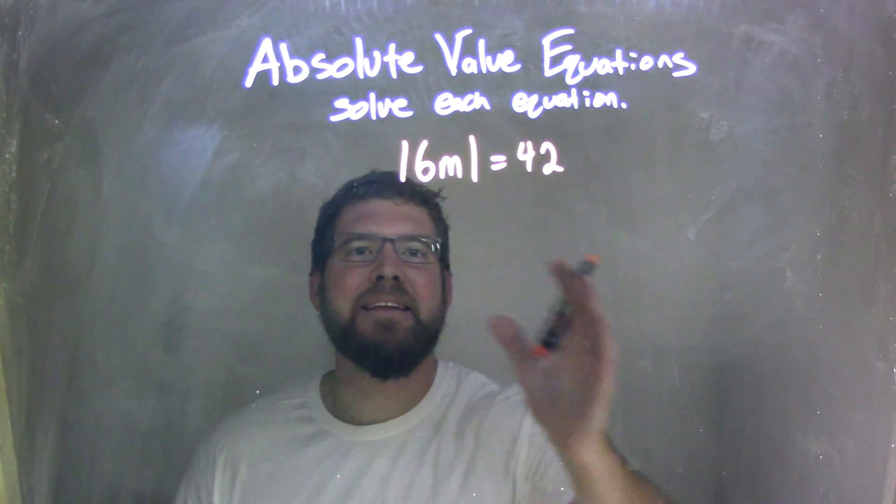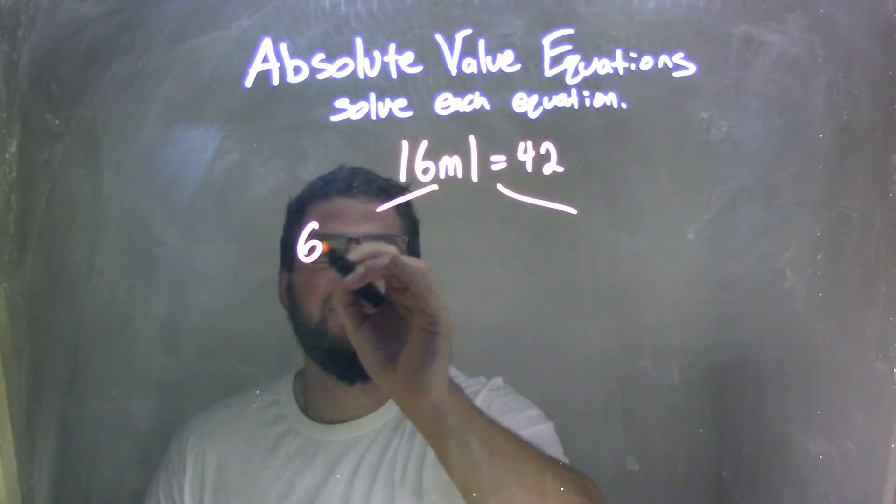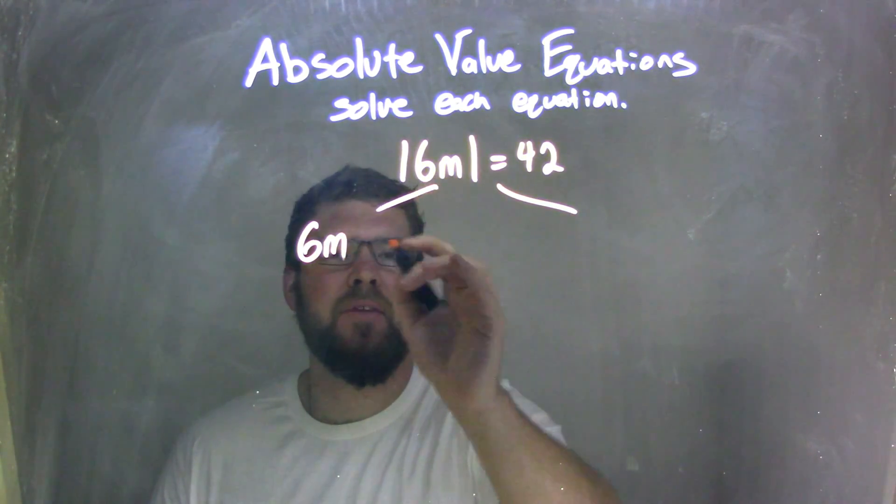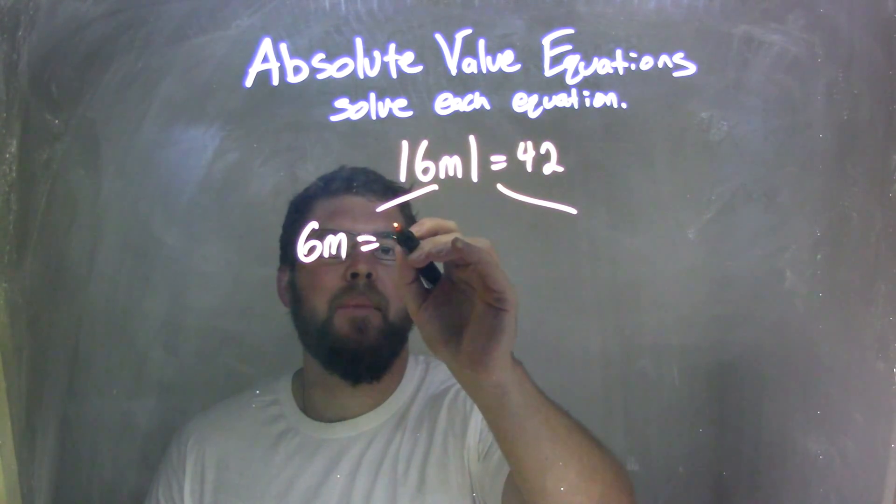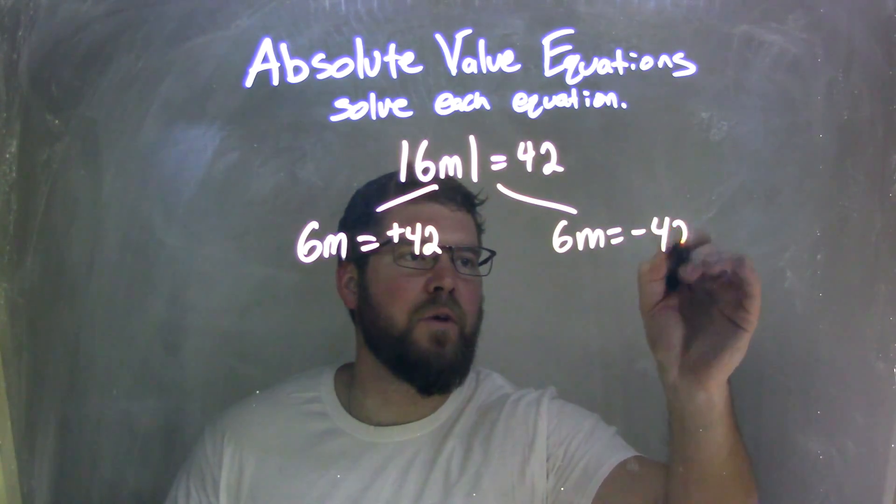Once that happens, we then can split this equation up into two parts. 6m, what's inside the absolute value, equals a positive 42, and 6m equals a negative 42.